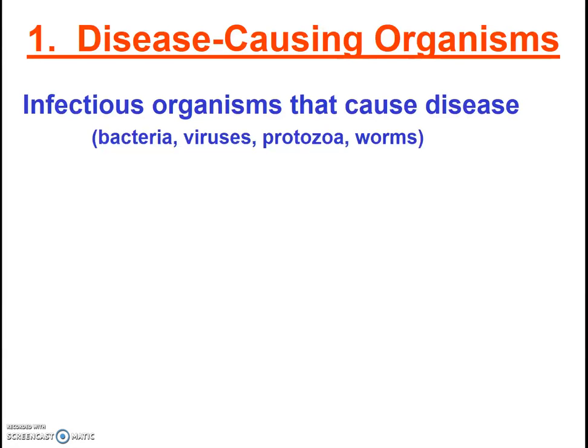Our first type of water pollution is disease-causing organisms — bacteria, protozoa, viruses, or worms. Can you name specific organisms and water-borne diseases? What are the sources? In many cases, it is human feces or the feces of other animals. Can you identify specific point source and non-point sources for fecal contamination? The impact of this type is clear — it causes disease. What can you do to lessen this pollution or its impacts? Before moving on, make sure you've answered those five questions: define the type, give examples, give sources, state the problems, and note positive steps we can take.